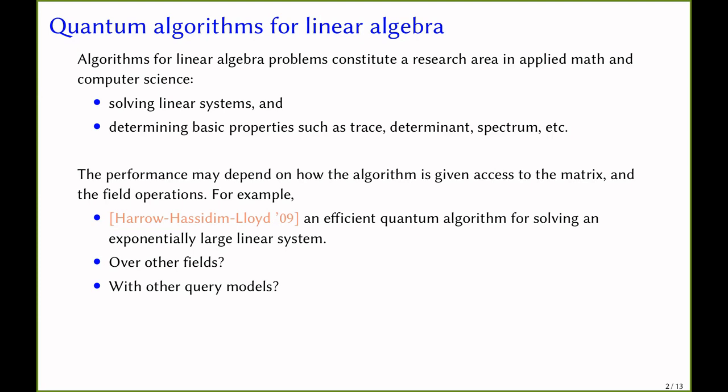While this is an exciting achievement, it uses the property that the field of quantum mechanics is the complex numbers. It is not obvious how to apply the same algorithm when the task is to solve a linear system over other fields, such as the real numbers or a finite field. Also, the HHL algorithm works when the algorithm is given access to an oracle that returns the entries of the matrix, and it is unclear how to apply the same algorithm when given access to a different oracle.